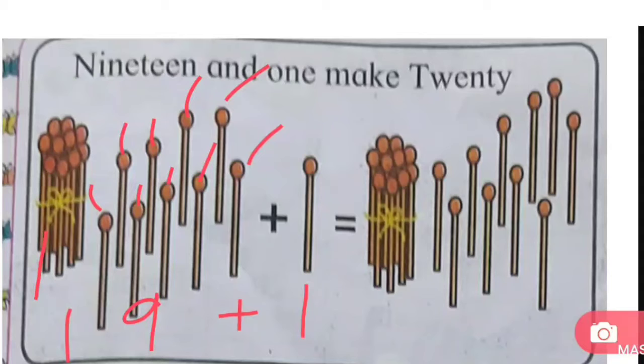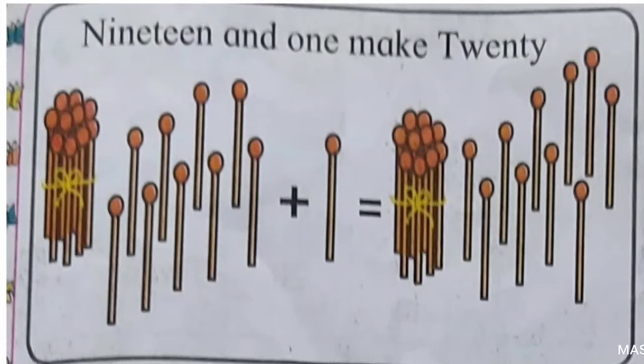If we add 1, then what will it become? 20. See, 1 bundle of matchsticks was there before. We had here 1, 2, 3, 4, 5, 6, 7, 8, 9, 10. This is 10 matchsticks. We have done a bundle here.